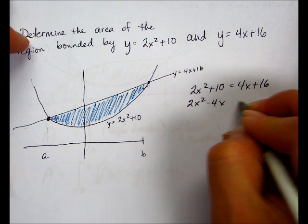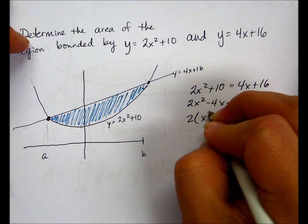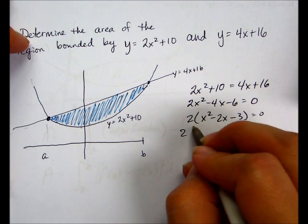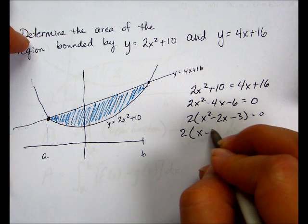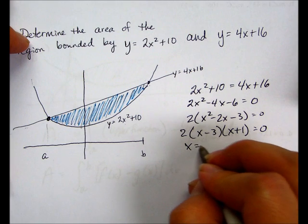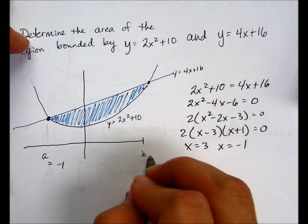Okay, to solve this, we're going to move everything over to one side. And we're going to factor. So we're going to get x equals 3 and x equals negative 1. So this is negative 1 and this is 3.